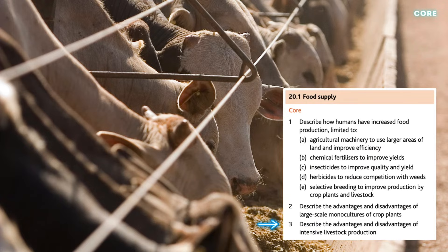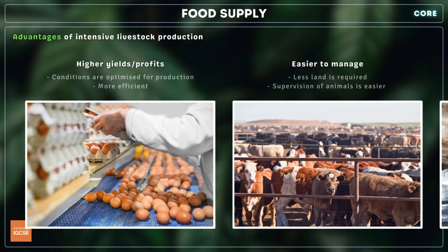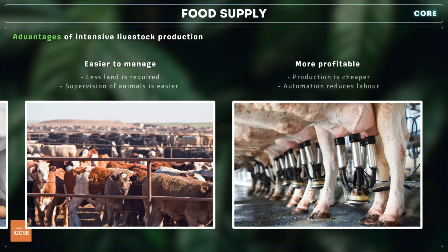Finally, you need to describe the advantages and disadvantages of intensive livestock production. Intensive livestock production, otherwise known as factory farming, is more efficient than natural or free-range alternatives and the yield is much higher. Less land is required, supervision and treatment of the animals is easier and profits are higher for farmers. In addition, many of the systems required to rear livestock can be automated, which is cheaper and less labor intensive.